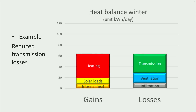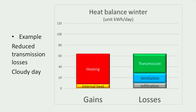By adding thermal insulation the transmission losses will be reduced, and this will reduce the heating demand by the same amount. And on a cloudy day, without any sun, the solar gain will decrease to zero and the heating demand will increase accordingly, while the heat losses will stay the same.